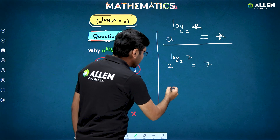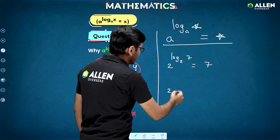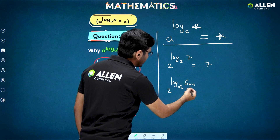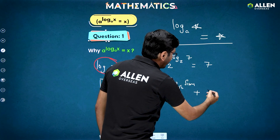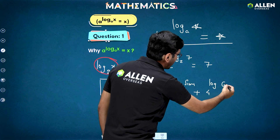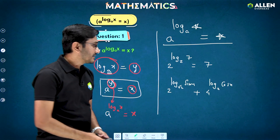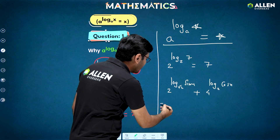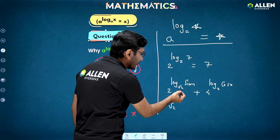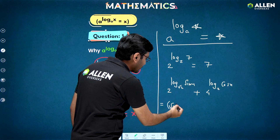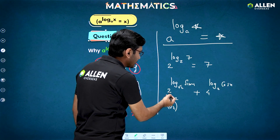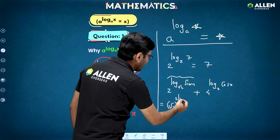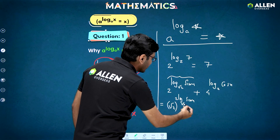Suppose I have 2 raised to log of sin x to the base root 2, and here I have 4 raised to log of cos x to the base 2. Can you imagine what will be the answer? Here I have 2, and I can write this 2 as root 2 squared, because here I have root 2. Then this power of 2 will get multiplied with the power log of sin x to the base root 2.